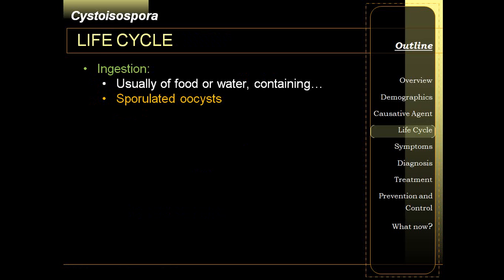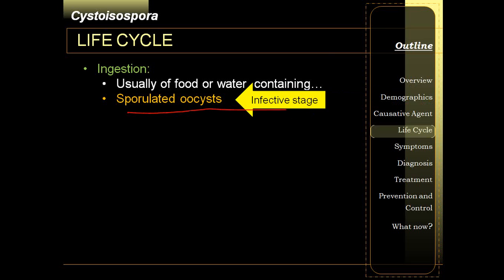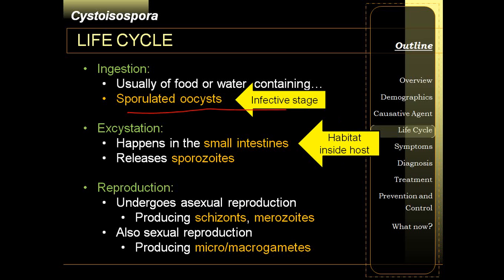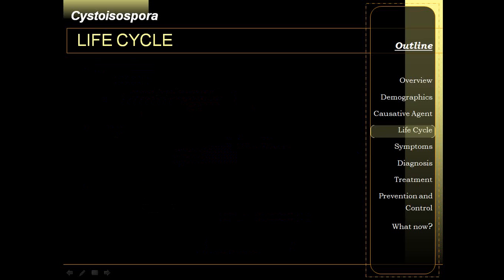Similar to the first two, the sporulated oocyst would be the infective stage. After ingestion, very similar — going into the intestines, where they undergo both sexual and asexual reproduction.